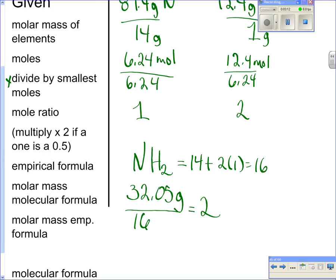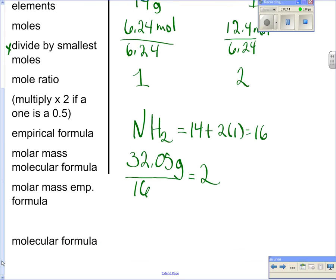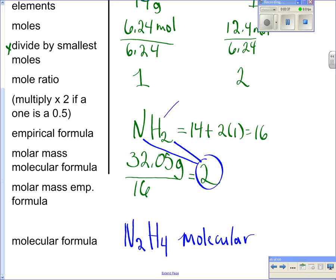So then to figure out my molecular formula, I take my empirical formula, which is NH2, and then I'm going to take that 2, and I'm going to multiply by each one of those subscripts. So I'm going to end up with N2, and then 2 times 2 is 4, H4. So that's my molecular formula. This is my molecular formula, and this is my empirical formula.